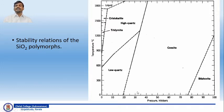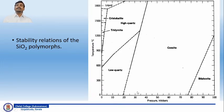The intermediate pressure and temperature variety of silica is coesite. Whereas the low temperature and low pressure variety of quartz is called low quartz. And the high temperature, low pressure silica is termed as tridymite and cristobalite. So these are different examples for polymorphs as a function of pressure and temperature.